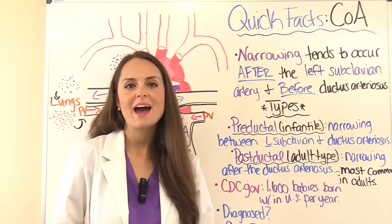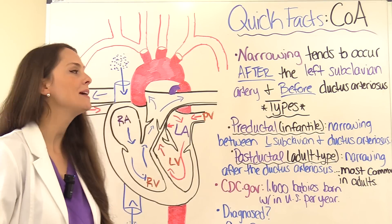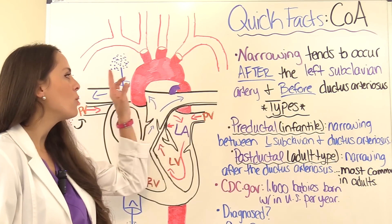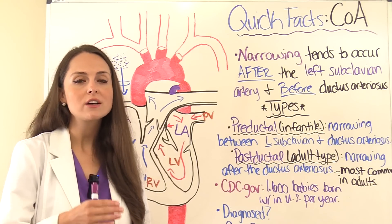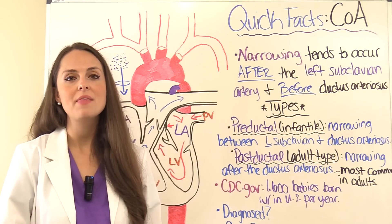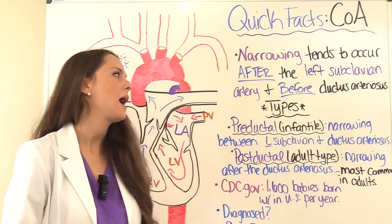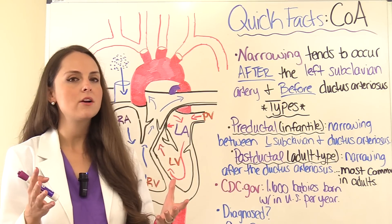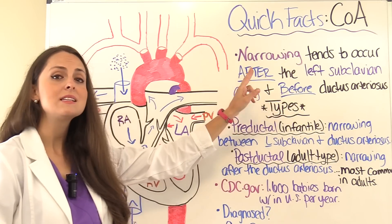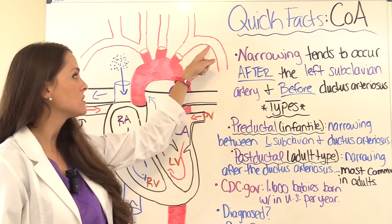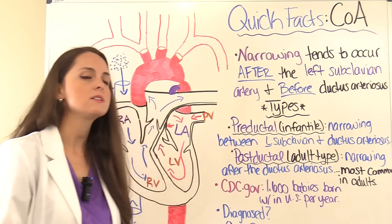Now some quick facts about coarctation of the aorta. Due to the narrowing, we'll have blood pressure changes proximal and distal to that narrowing. Where does this narrowing tend to occur? It tends to happen after the left subclavian artery, occurring a little after it and before the ductus arteriosus.